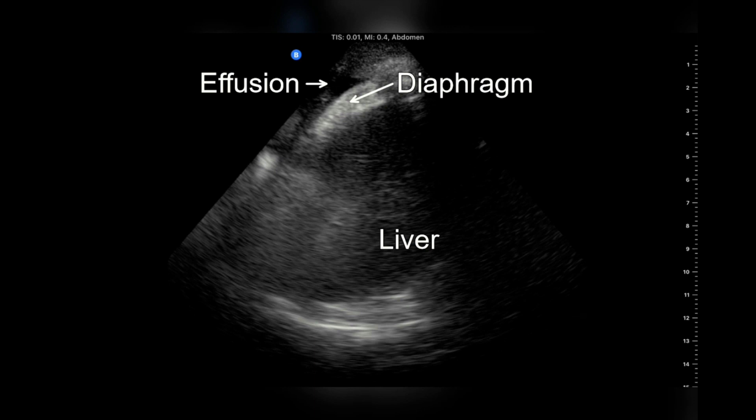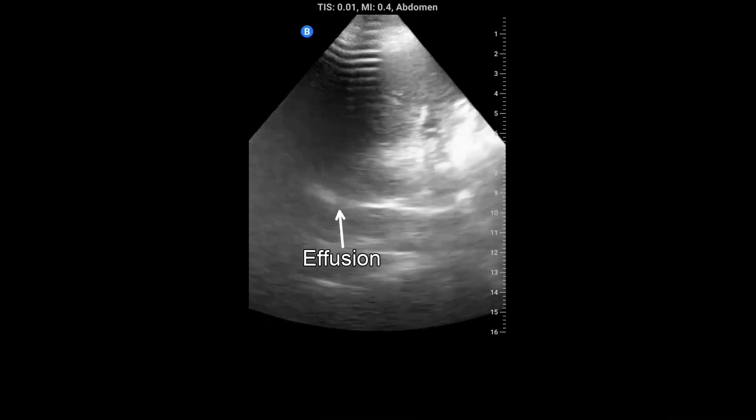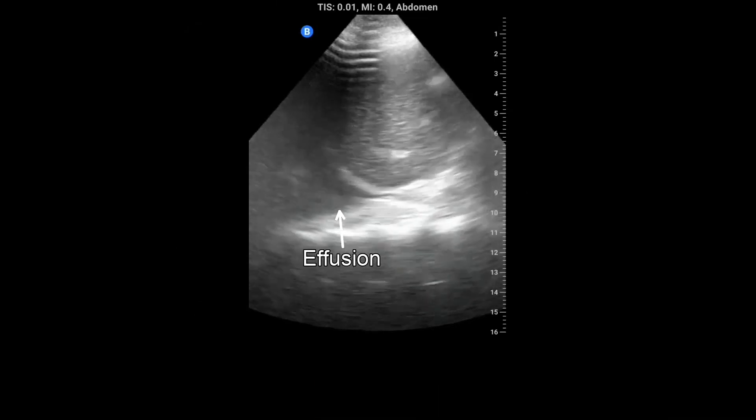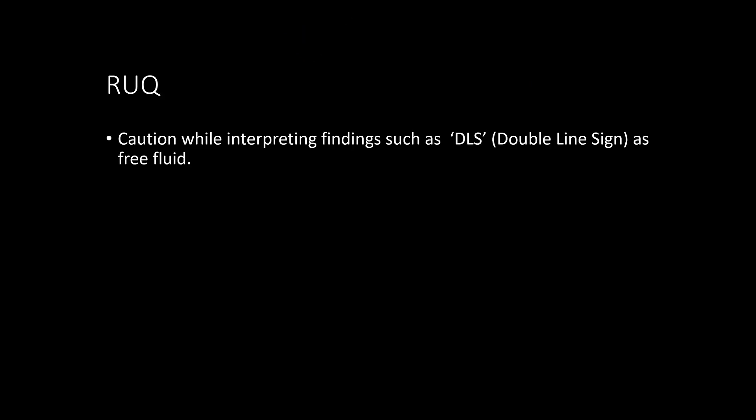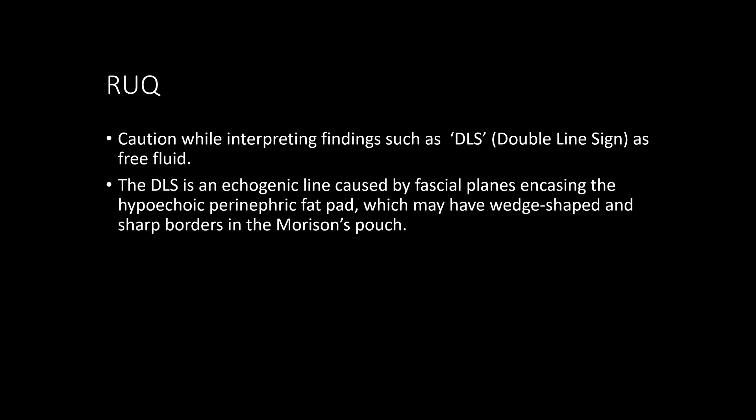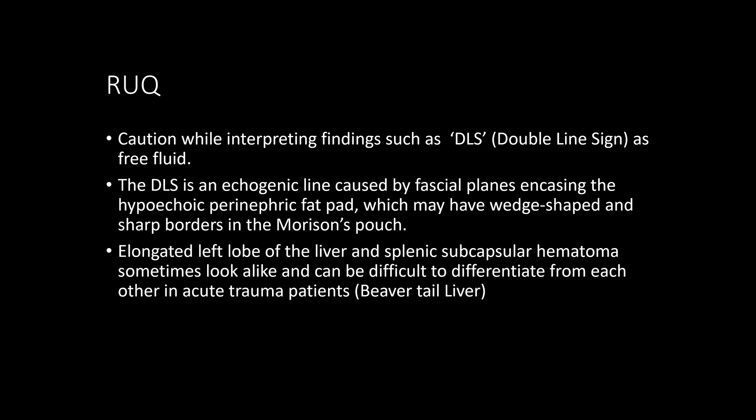Fluid above the diaphragm can also be seen. Exercise caution while interpreting normal variants like the double-line sign, caused by perinephric fat enclosed in fascial planes. An elongated left lobe of the liver, also called a beaver tail liver, may mimic subcapsular splenic hematoma.